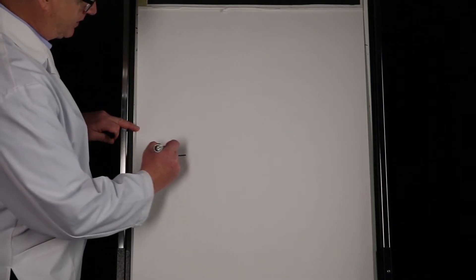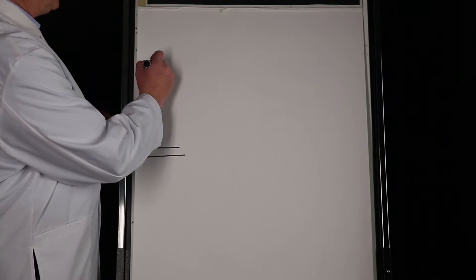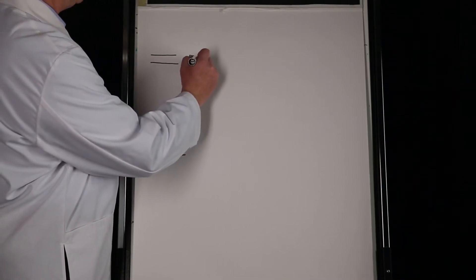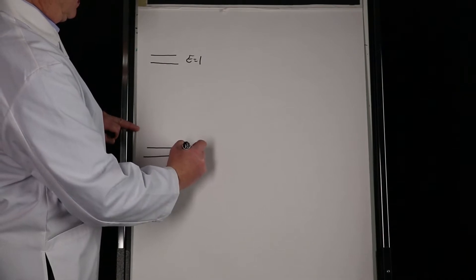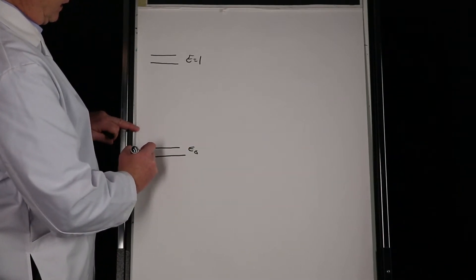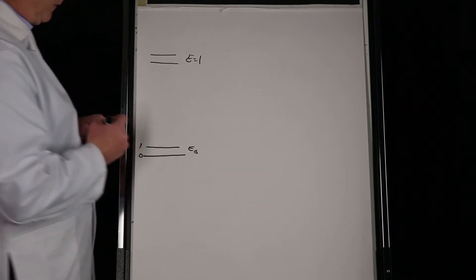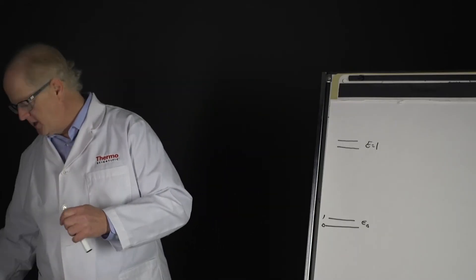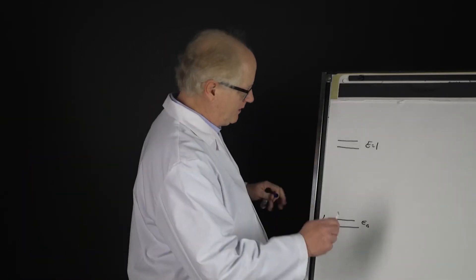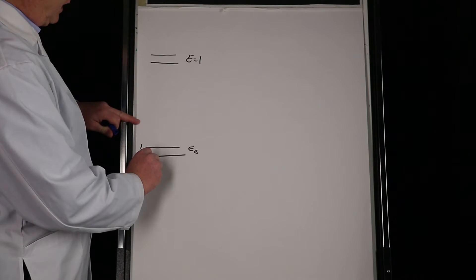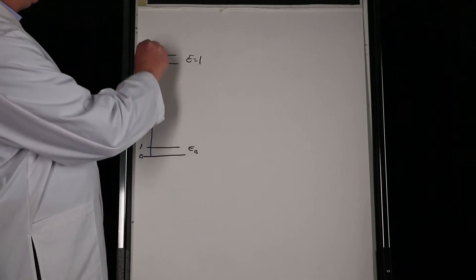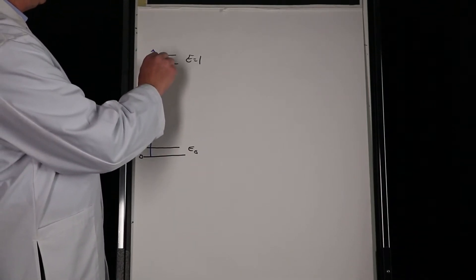Here's that energy level diagram - told you we would keep coming back to that. Here's our first electronic state, so that's E equals one, and this is E equals zero, and then V equals zero and one. Remember what we said: if we supply sufficient energy for the molecule to make it up to that electronic state...